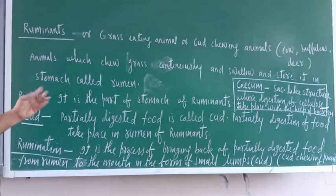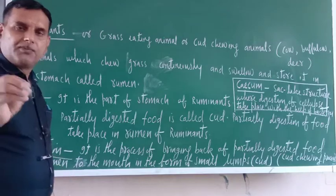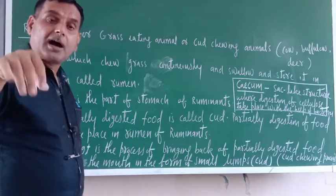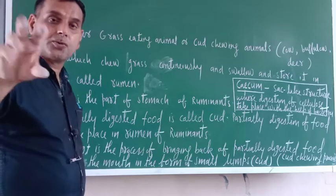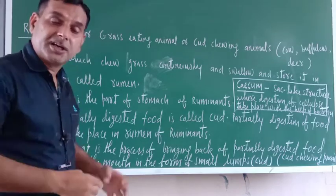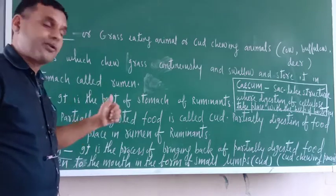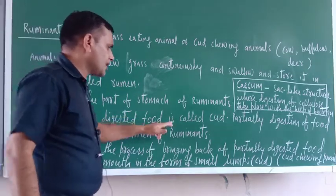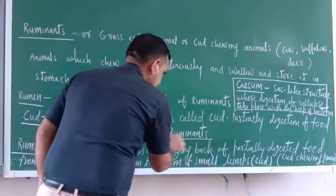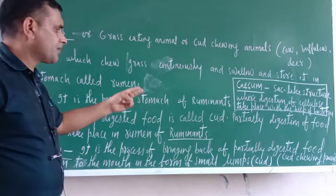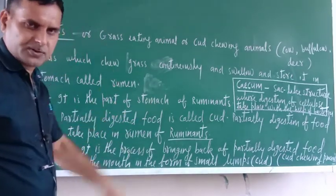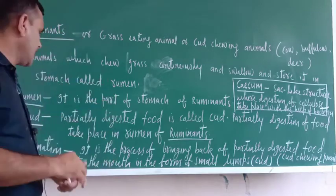Now, what is cud? First, they graze the grass and directly swallow it. After swallowing, it goes to their rumen and gets stored there, where it is partially digested. That partially digested food stored in their rumen is called cud. So partial digestion of food takes place in the rumen of ruminants, and that partially digested food is called cud.